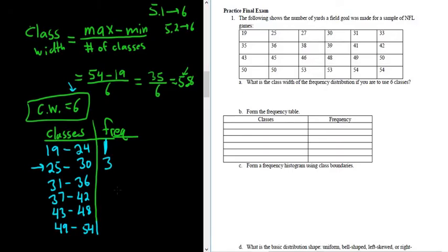31 to 36: 1, 2, 3, 4. The numbers are getting bigger. 37 to 42: 1, 2, 3, 4. 43 to 48: 1, 2, 3, 4. That's a lot of counting. And 49 to 54: wow, lots of them. 1, 2, 3, 4, 5, 6, 7, 8. Ridiculous.